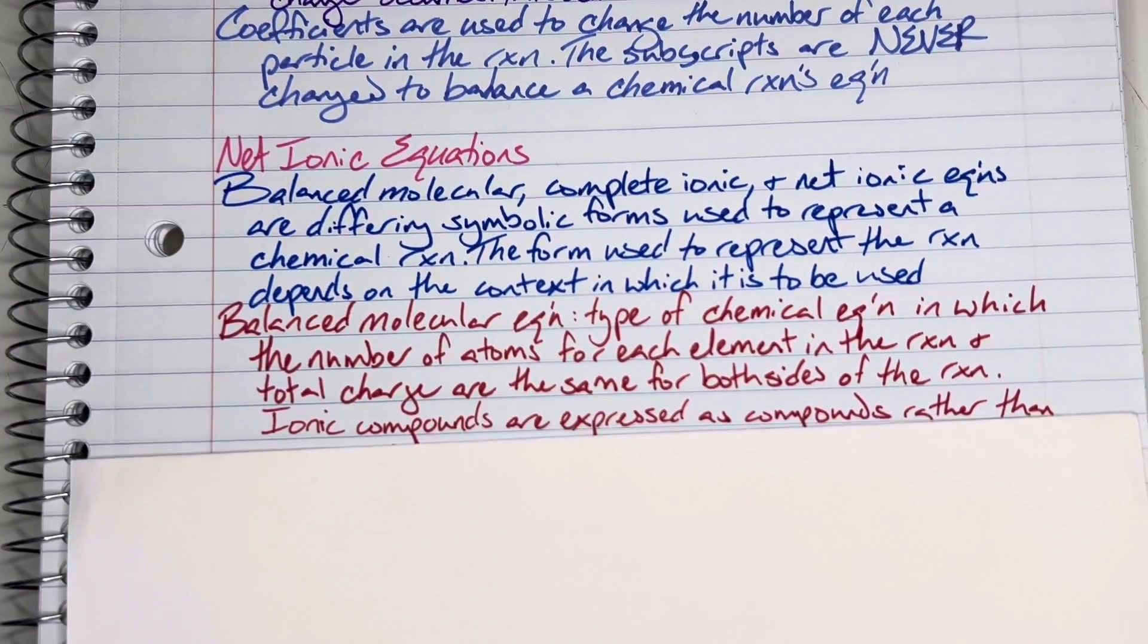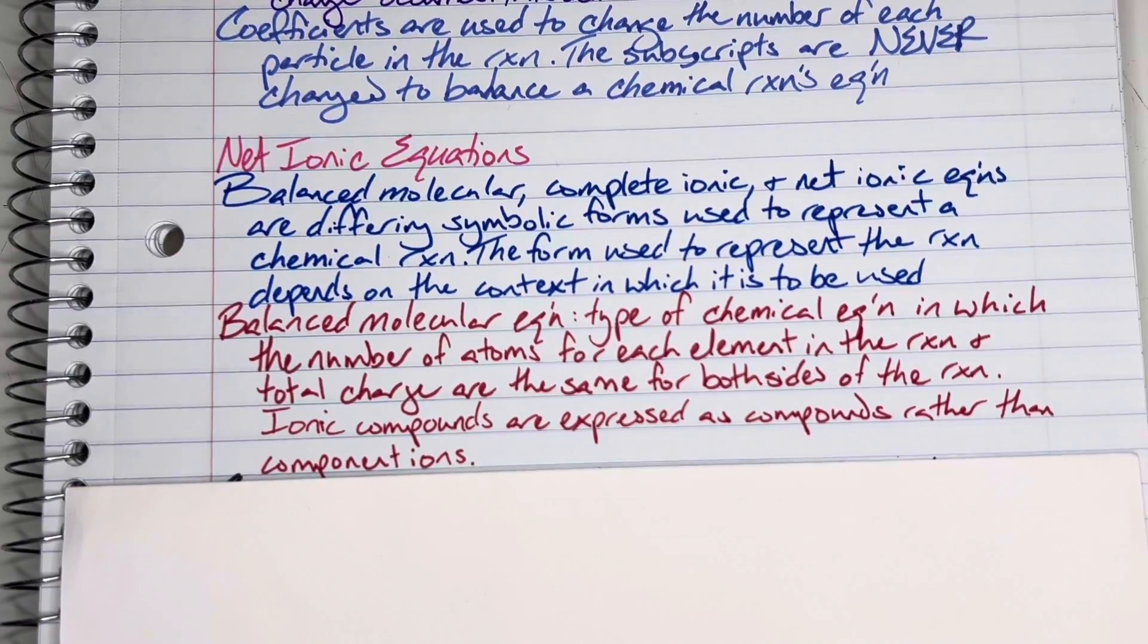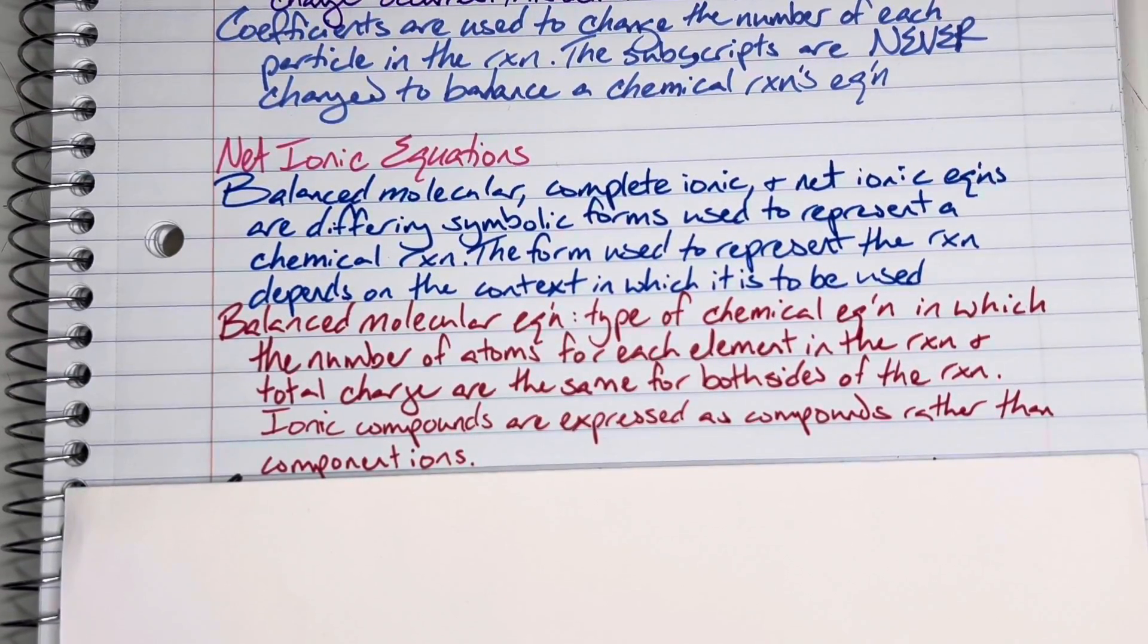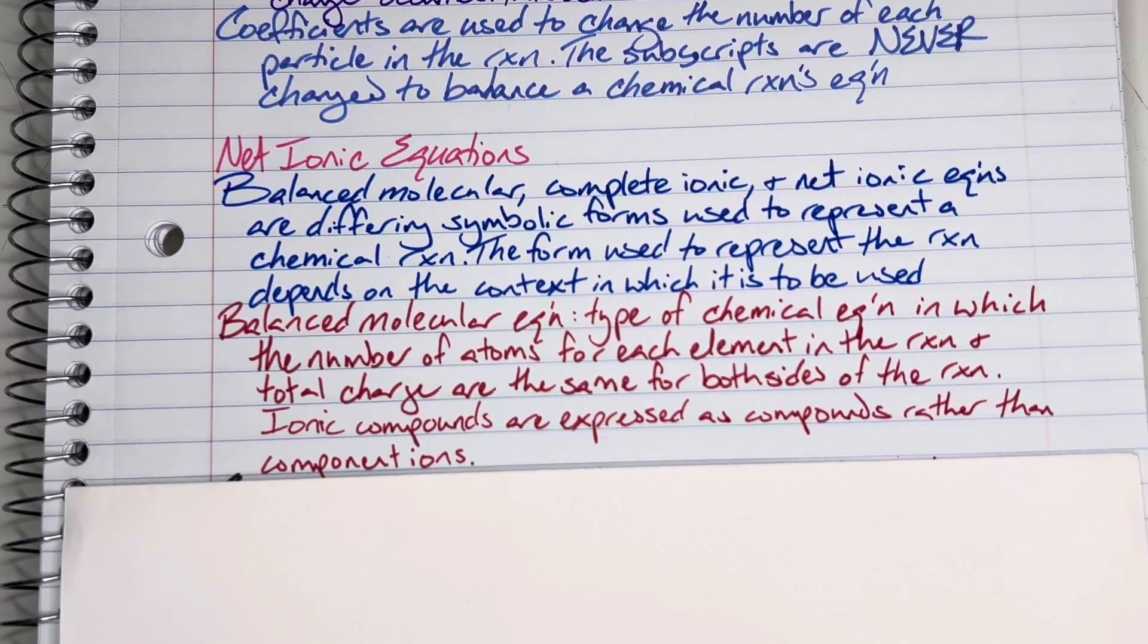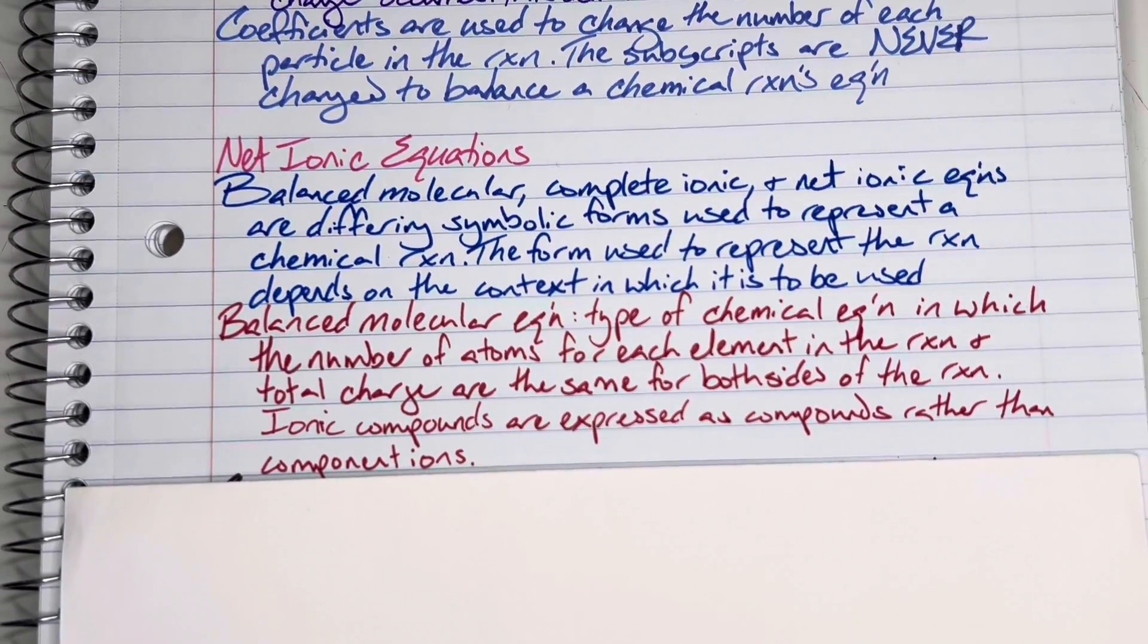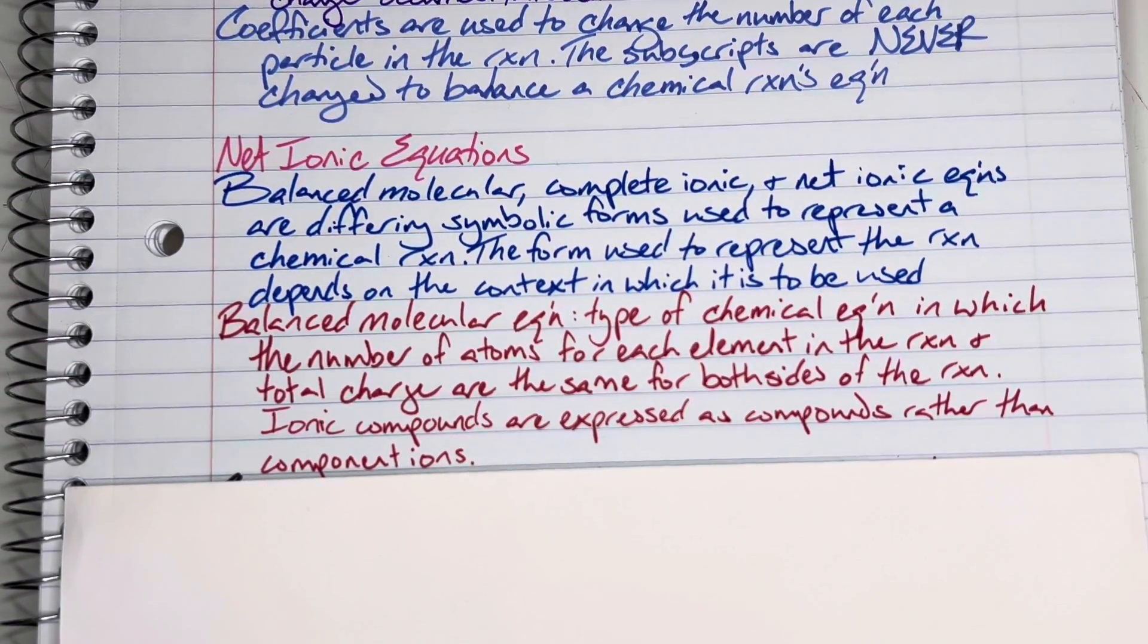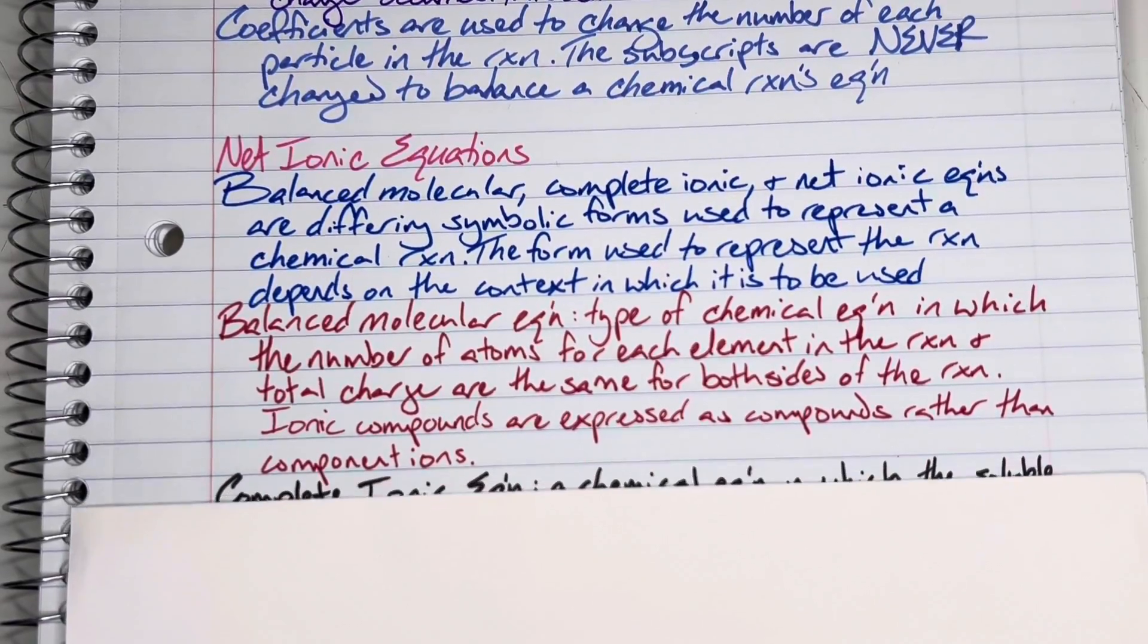Balanced molecular equations are going to be our typical starting point. They are what we are used to seeing. They are the type of chemical equation in which the number of atoms for each element and the total charge are the same on both sides of the reaction. Ionic compounds are expressed as compounds rather than component ions. Balanced molecular equations are what we have typically seen as chemical equations thus far.